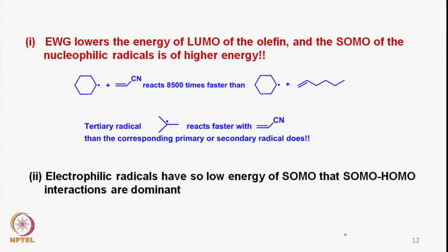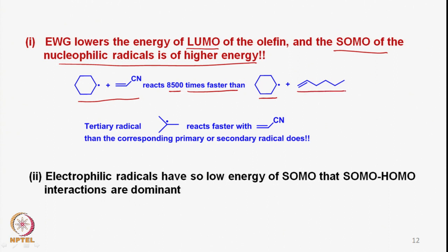We can also look at specific rate examples. Electron-withdrawing groups lower the LUMO of the olefin, and the SOMO of nucleophilic radicals is of higher energy. For instance, cyclohexyl radical reacts 8,500 times faster with an electron-deficient olefin than with an ordinary olefin with no electron-withdrawing group. Tertiary radicals, being more electron-rich, react faster with acrylonitrile than secondary or primary radicals due to the electron-releasing nature of substituents. Similarly, electrophilic radicals have low SOMO energy and therefore SOMO–HOMO interactions are dominant for them.